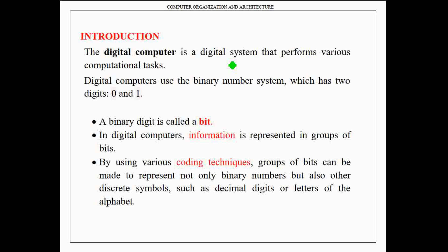The digital computer is a digital system that performs various computational tasks. Digital computers use the binary number system which has two digits, 0 and 1. These binary digits are known as bits. In digital computers, information is represented in groups of bits — that is, in groups of 0s and 1s.